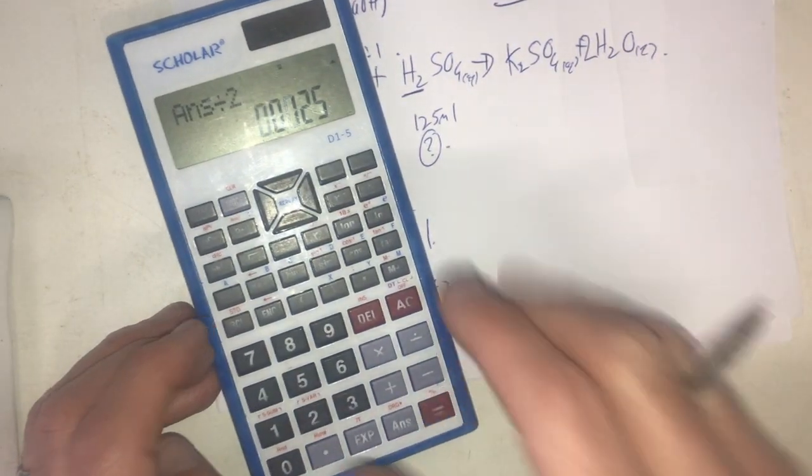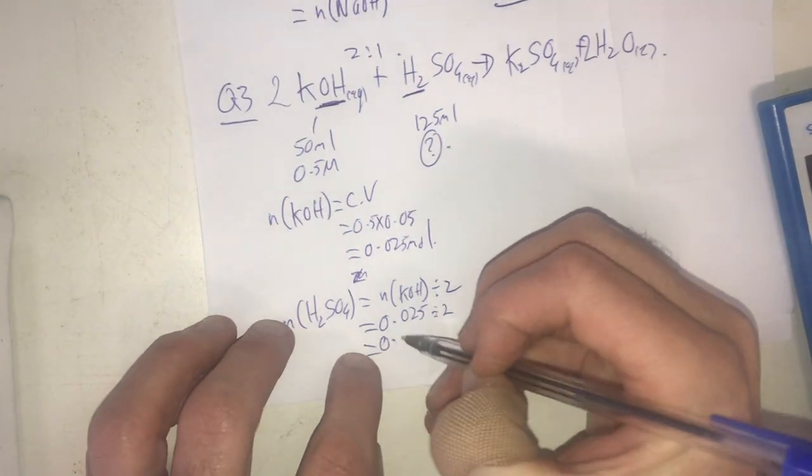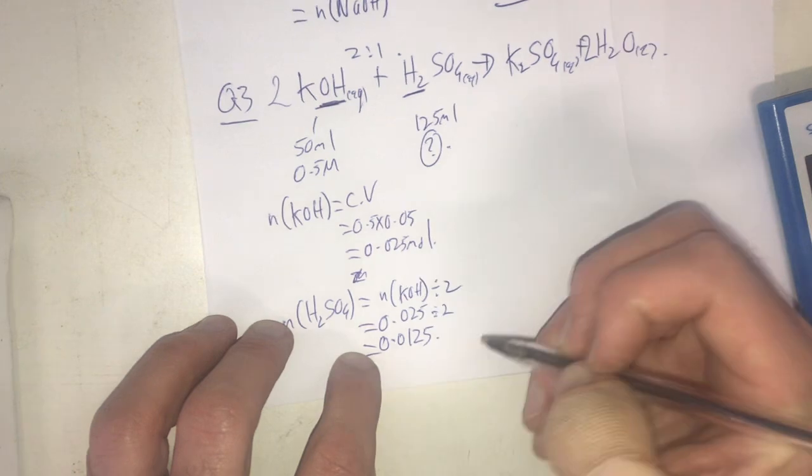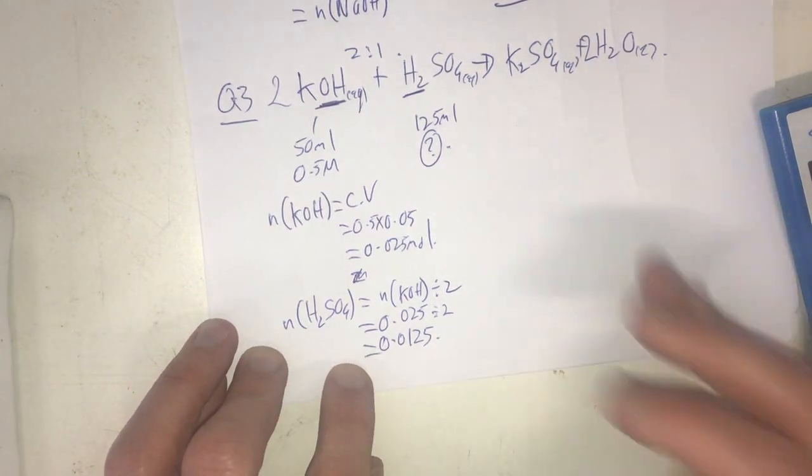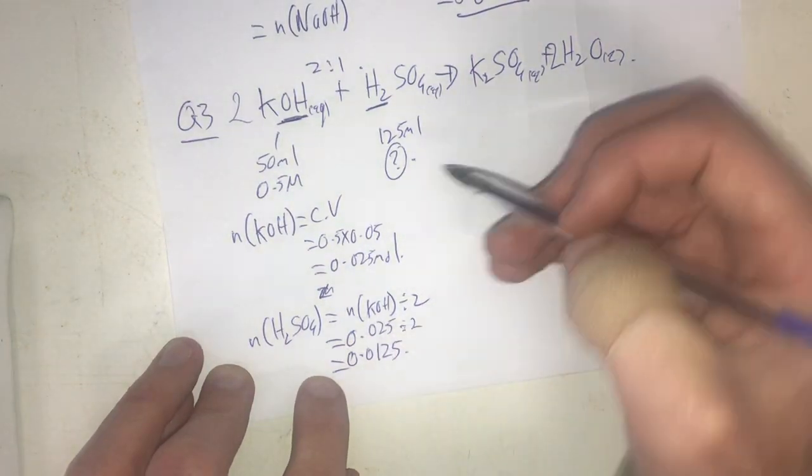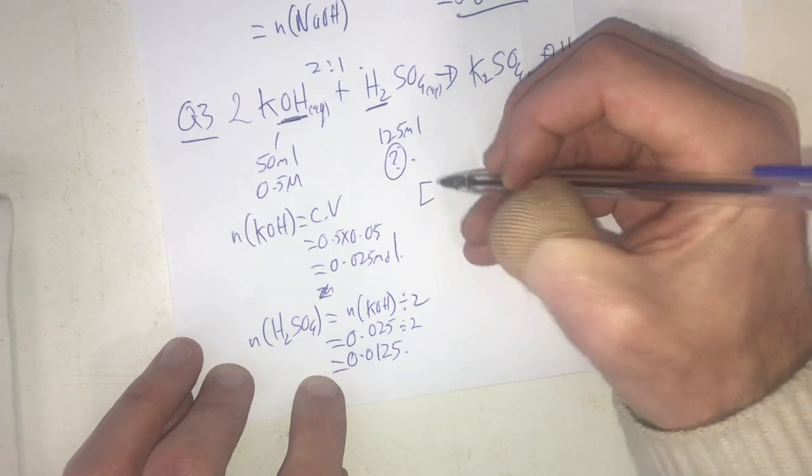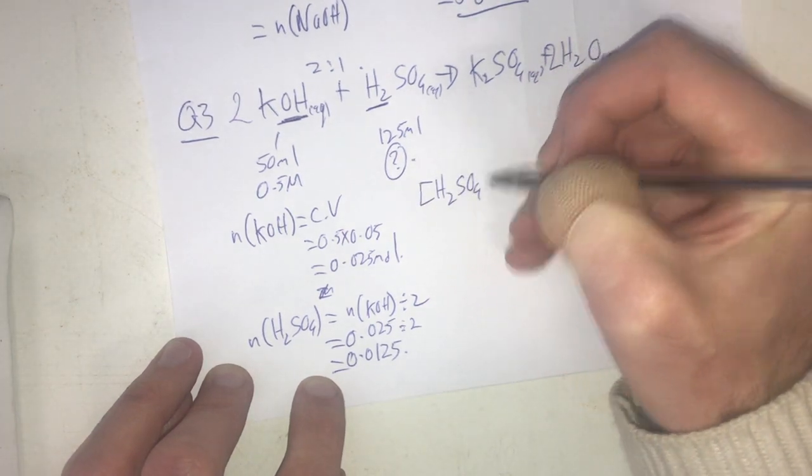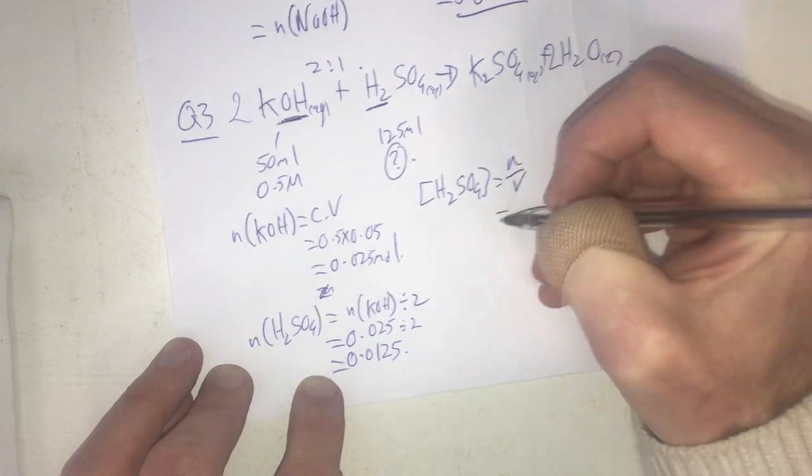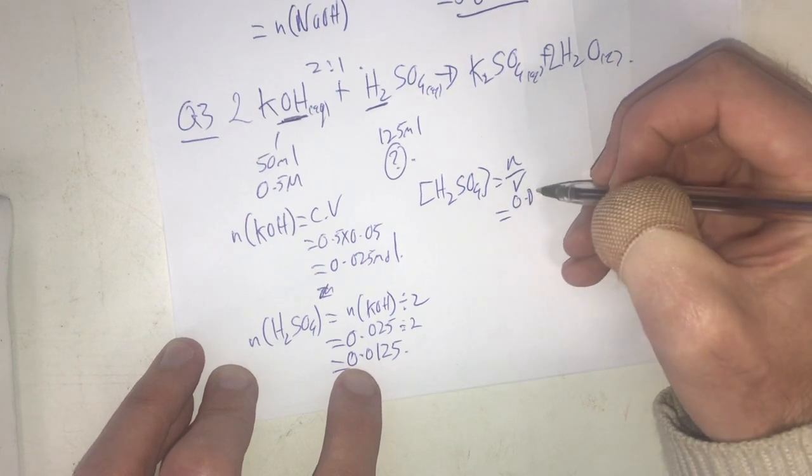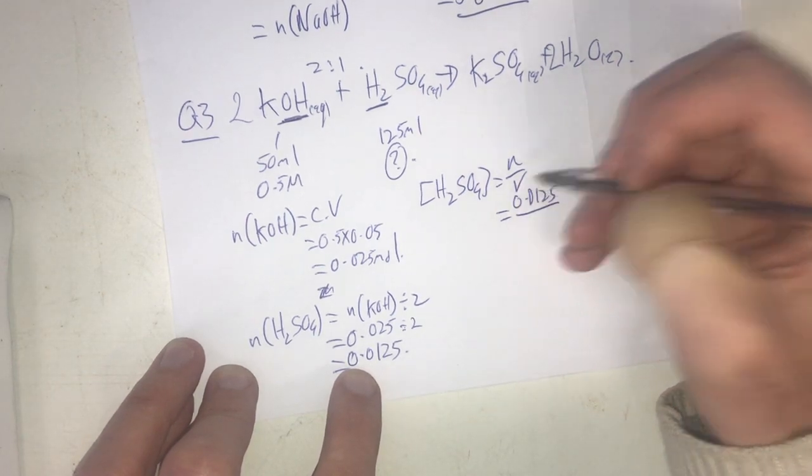I can do this in my head - 0.0125. So that's my number of moles of my sulfuric acid, and then I simply just put it into working out my concentration. That equals N over V, which equals 0.0125 divided by my volume, which is going to be 0.125.